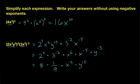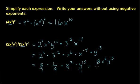Since we have a fraction here, we look at all of these terms as fractions: 8 over 1, x squared over 1, y to the 15th over 1. When we multiply across our numerators and our denominators, we end up with 8x squared y to the 15th over 9. That can't be simplified any further, so that is our final answer.